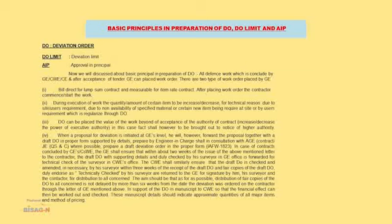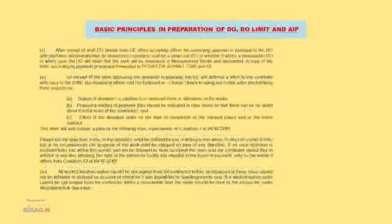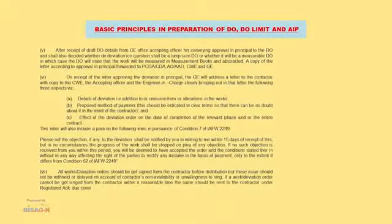In support of the DO, the manuscript detail submitted to the CW should show that the final cost effect can be worked out and checked. This manuscript detail should indicate approximate quantities for all major items and the method of pricing.